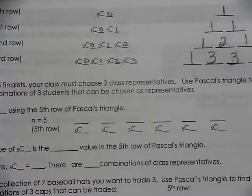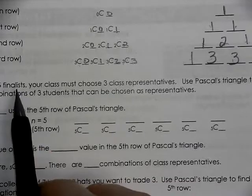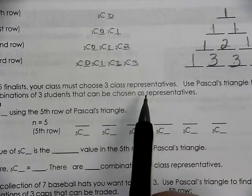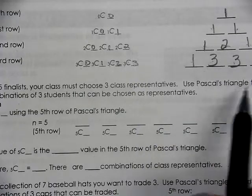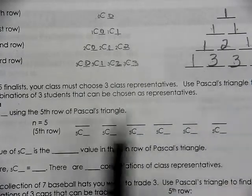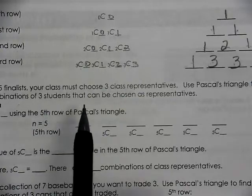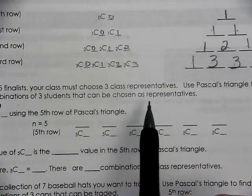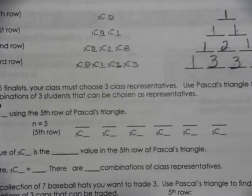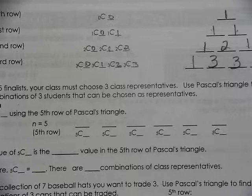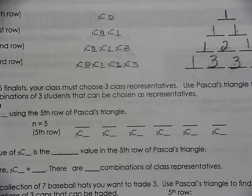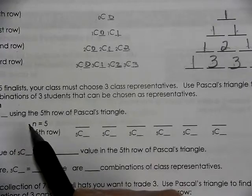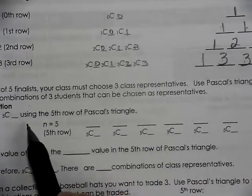If you were to do a basic story problem — out of five finalists, your class must choose three class representatives — we're going to use Pascal's Triangle to find the number of combinations. Notice this is a combination because the order doesn't matter. It's not a president, vice president, and secretary where changing the order gives different positions. Here we're just looking for representatives. So we're planning to use 5C3.